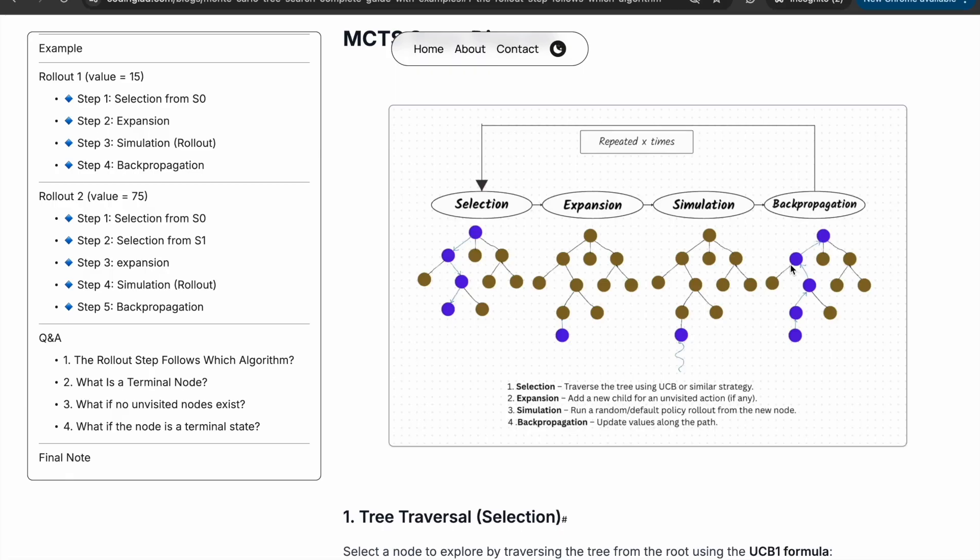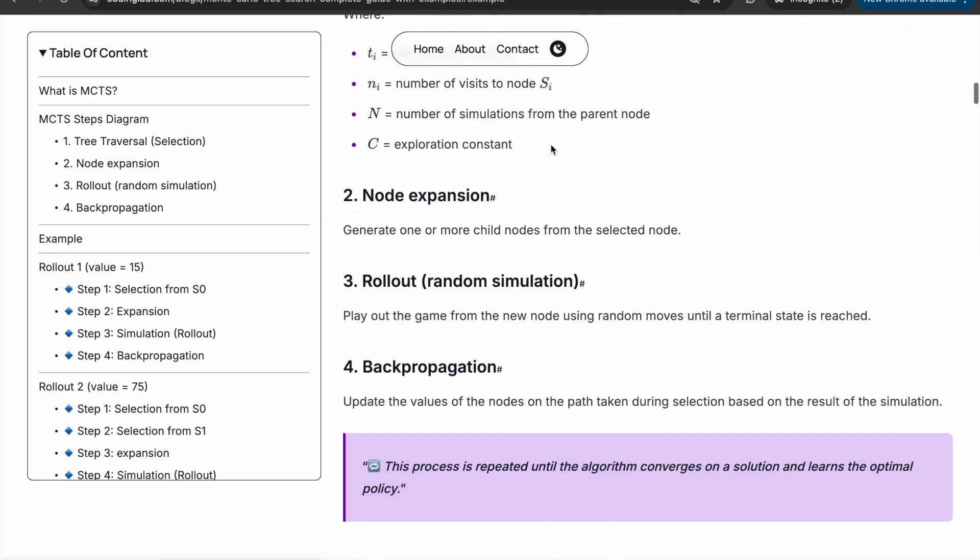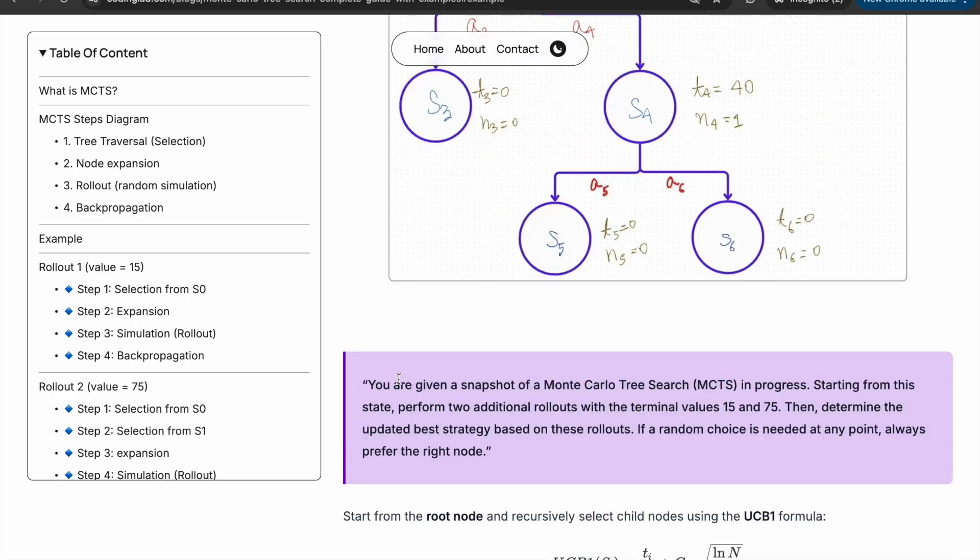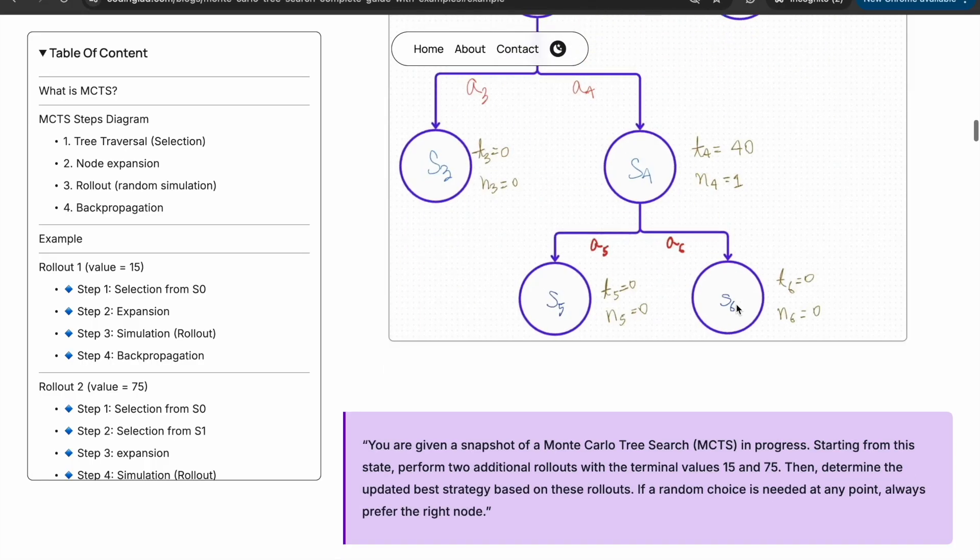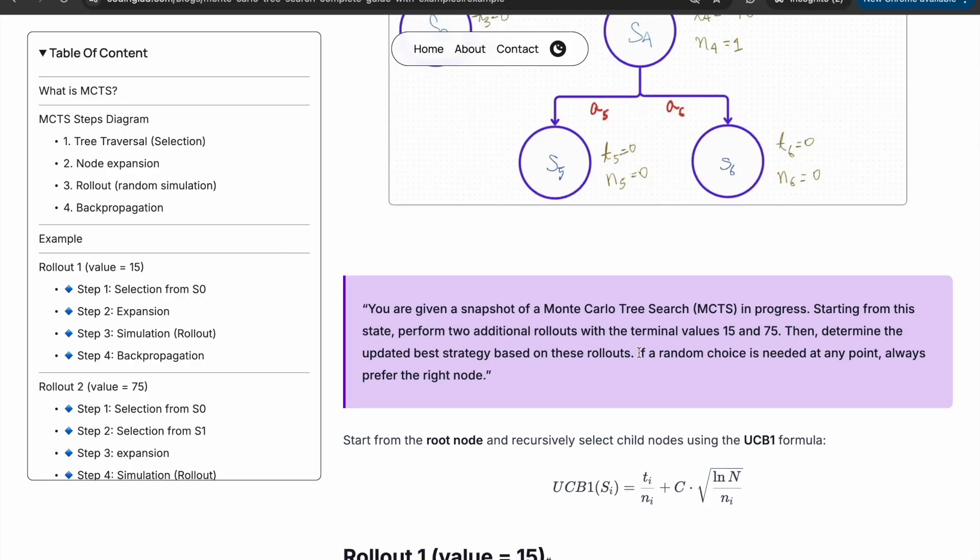This entire four-step process is repeated many times, allowing the tree to grow and prioritize better moves over time. Alright, that's the theory. Now let's jump into an example so you can see it in action. Trust me, it will all make sense. You are given a snapshot of an MCTS in progress. Starting from this state, perform two additional rollouts with terminal values 15 and 75. If a random choice is needed at any point, always prefer the right node.